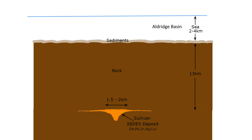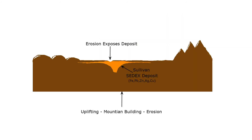An example of SEDEX mineralization is the 1.34 billion year old Sullivan deposit. It formed in an ancient sea basin known as the Aldridge, which today is located in the East Kootenay region of British Columbia. Here, sediments shedding into the sea basin eventually built up 13 kilometers of rock over the deposit. Uplifting due to continental collisions eventually moved these basin rocks upward, exposing them to the forces of erosion. After hundreds of millions of years, this rock eroded away to the point of cutting into this long-buried SEDEX deposit.